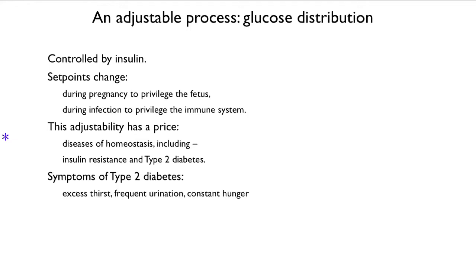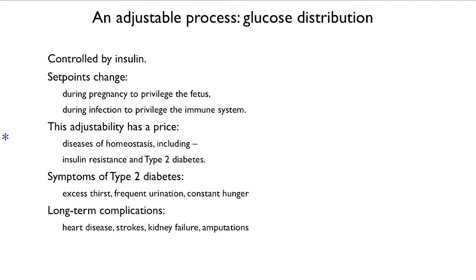The symptoms of type 2 diabetes are excess thirst, frequent urination, and constant hunger. This kind of diabetes is caused not by too little insulin in the blood, but by the fact that cells are resistant to the amount of insulin that is there — that's different from type 1 diabetes. The long-term complications of type 2 diabetes can be quite serious: heart disease, strokes, kidney failure, and amputations.